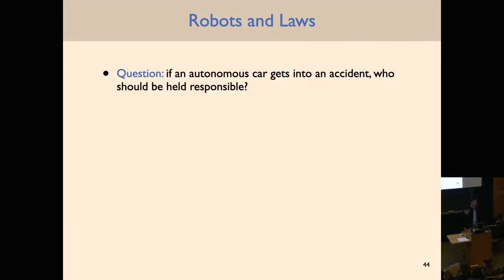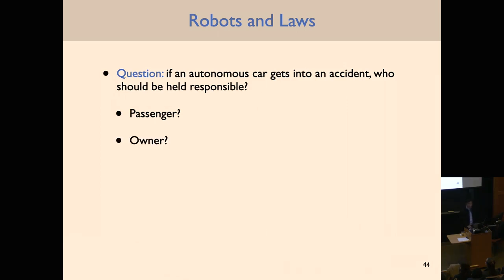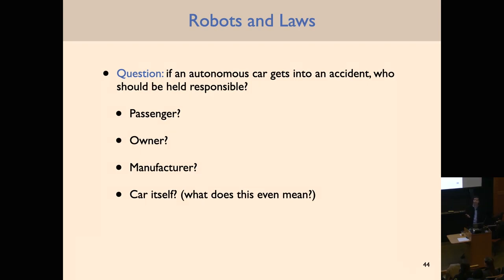Another set of questions is robotics and laws. A thought experiment: if an autonomous vehicle gets into an accident, who should be held responsible? Reasonable options include the passenger, the owner of the car, the manufacturer, the car itself, or no one. A student suggested tracing fault to the responsible party — if there's a sensor failure, maybe the car manufacturer chose a bad sensor or didn't build in enough redundancy. Another student noted it depends on how the accident happens and how severe it is.